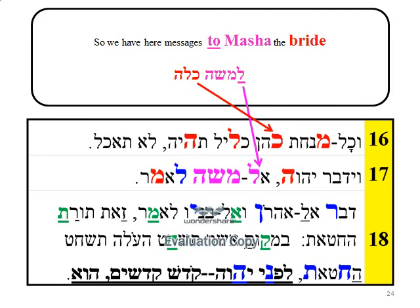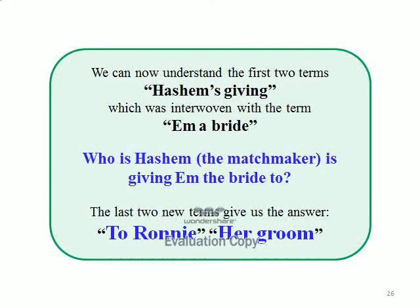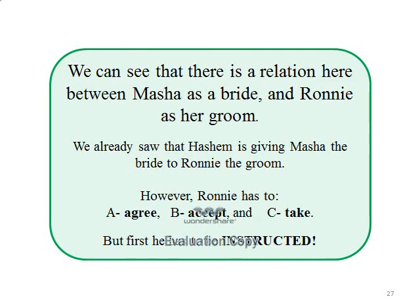So we have here messages to Masha the bride and to Roni her groom. We can now understand the first two terms — 'Hashem's giving,' which was interwoven with the term 'EM a bride.' Who is Hashem the matchmaker giving EM the bride to? The last two new terms give us the answer: to Roni her groom. There is a clear relation between Masha as the bride and Roni as her groom. We already saw that Hashem is giving Masha the bride to Roni the groom.